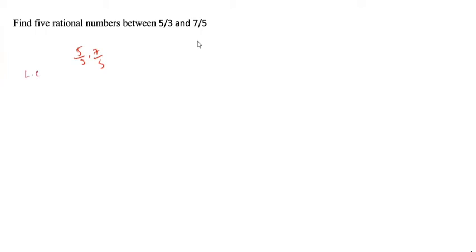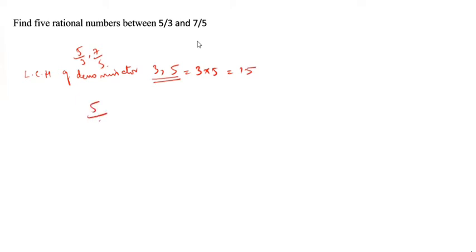So, we have to calculate the LCM of the denominator. What is the LCM of the denominator? 3 comma 5. So, 3 comma 5, LCM is equal to 3 into 5, is equal to 15. So, 5 by 3 comma 7 by 5. LCM of denominator is 15.